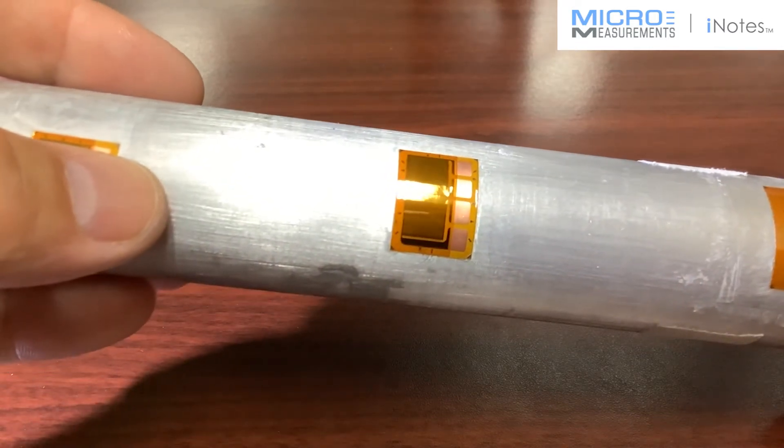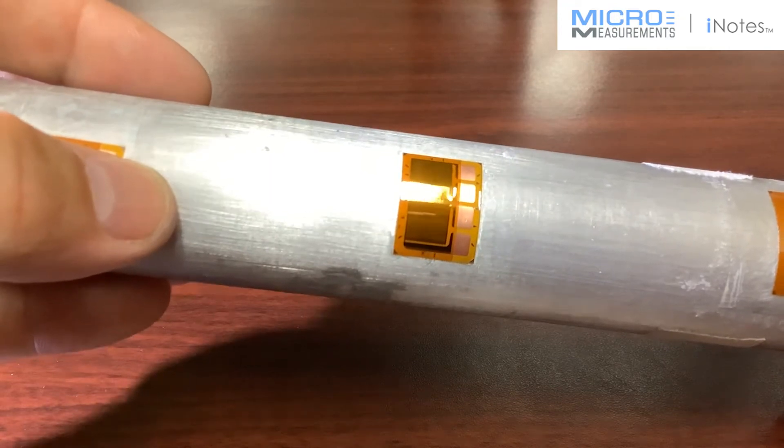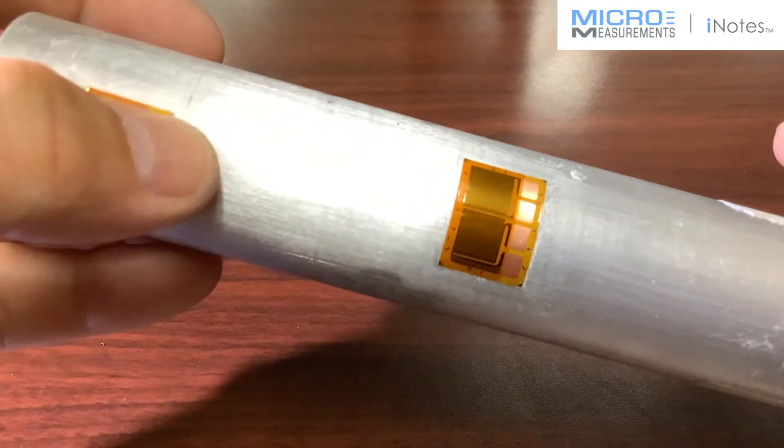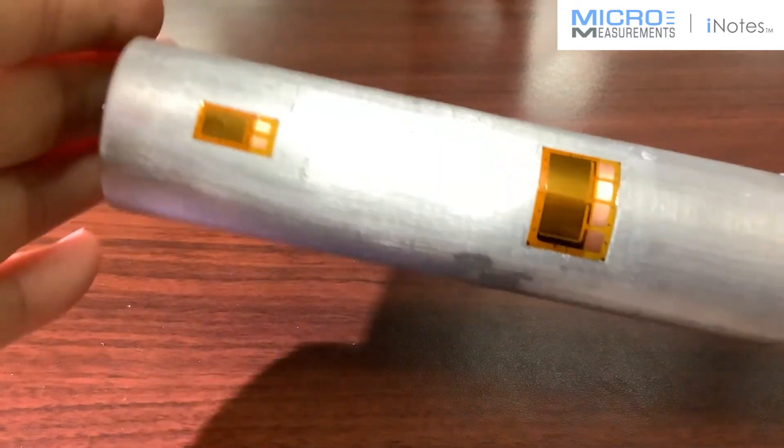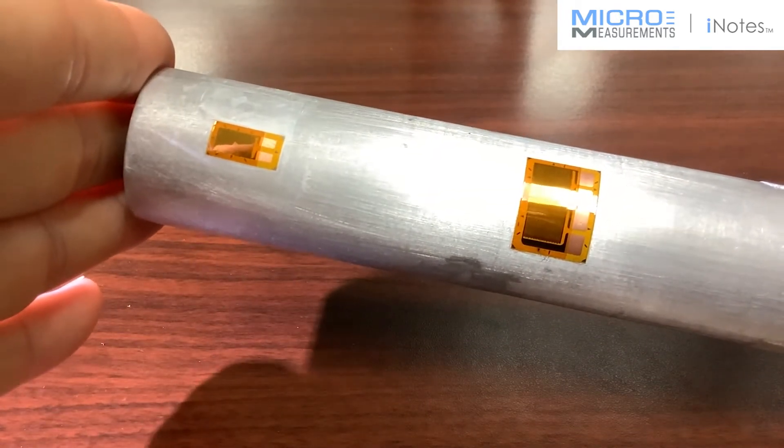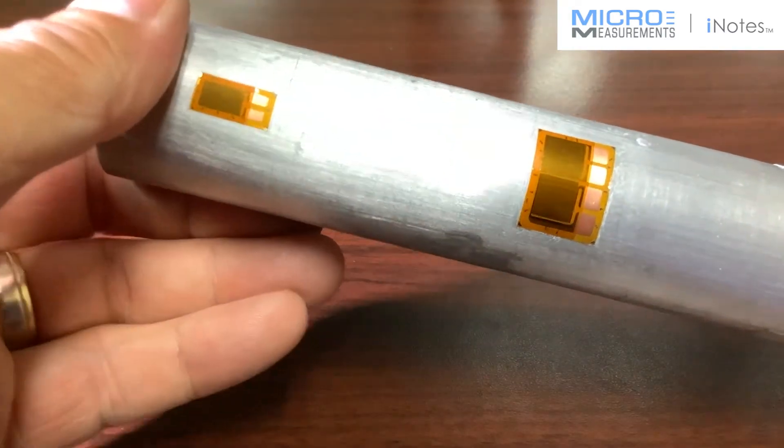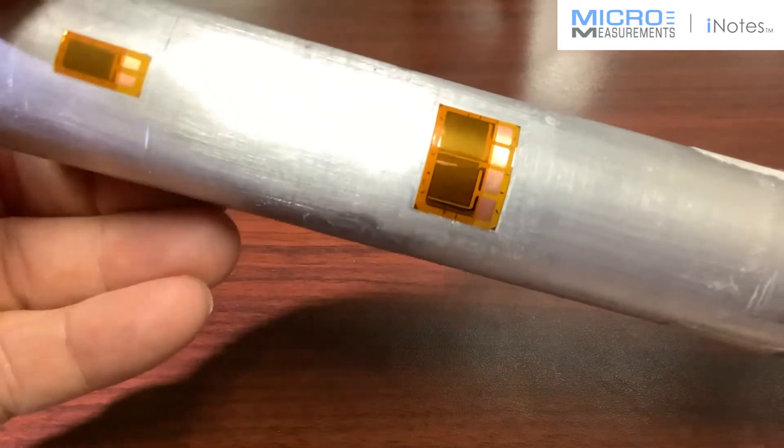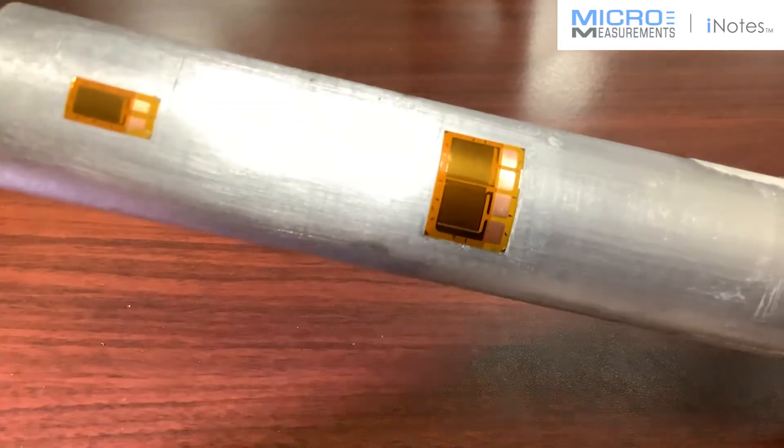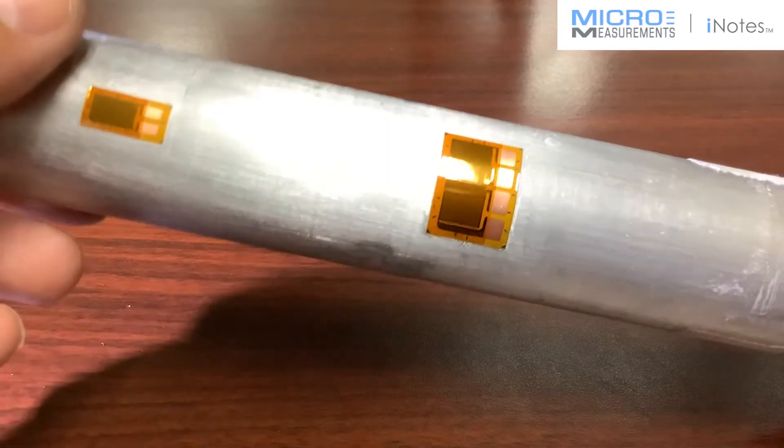That would be constructing a full Poisson bridge, and that full Poisson bridge, one of the unique characteristics about it is that you could orient the gauges and wire them such that you could measure that axial tension or compression, but you could also orient them so that you could measure bending in the tube as well. You get to choose how you wire it in order to dictate whether or not you measure axial or you measure a bending strain.